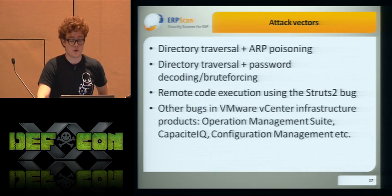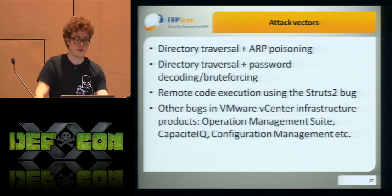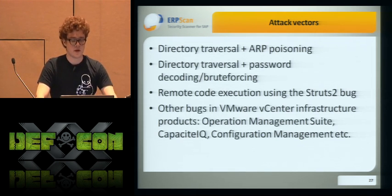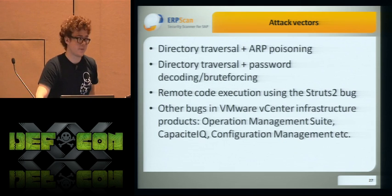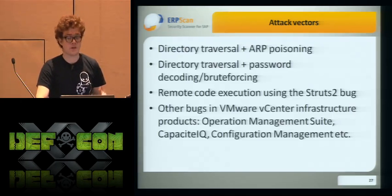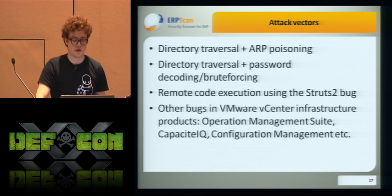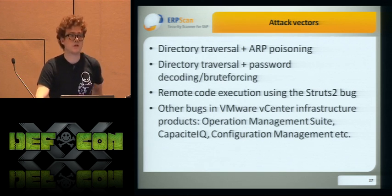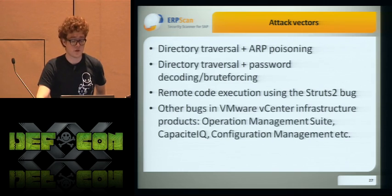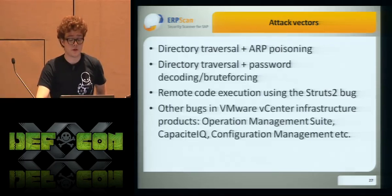So there are four vectors to attack vCenter. We found: directory traversal combined with ARP poisoning; directory traversal combined with password decoding; and remote code execution using the Struts bug. Also, there are many vCenter infrastructure products — like Operations Management Suite, Capacity, and Configuration Management — all of which hold some sort of credentials for vCenter. So there may be other vulnerabilities in those systems as well.